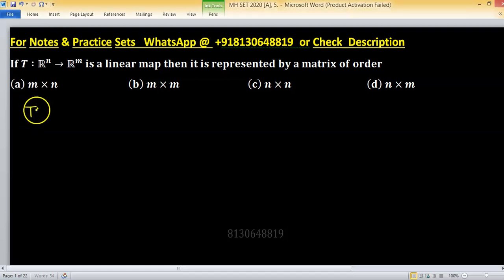In this given problem, T is a linear transformation defined from R^n to R^m and we have to find matrix representation and its order. So order of the matrix representation always comes in reverse order.